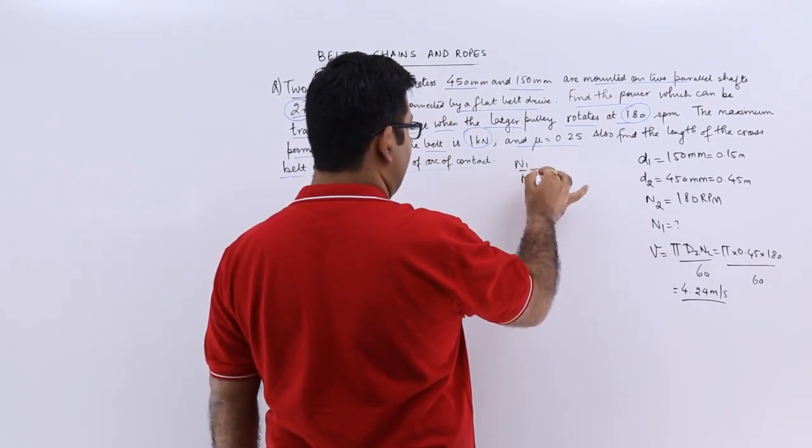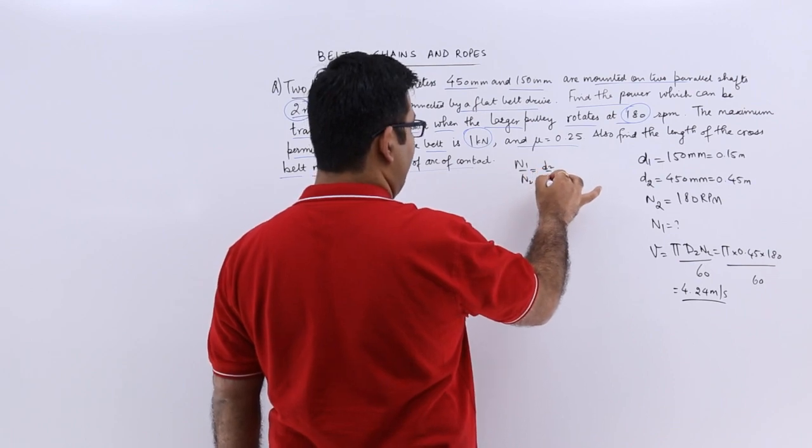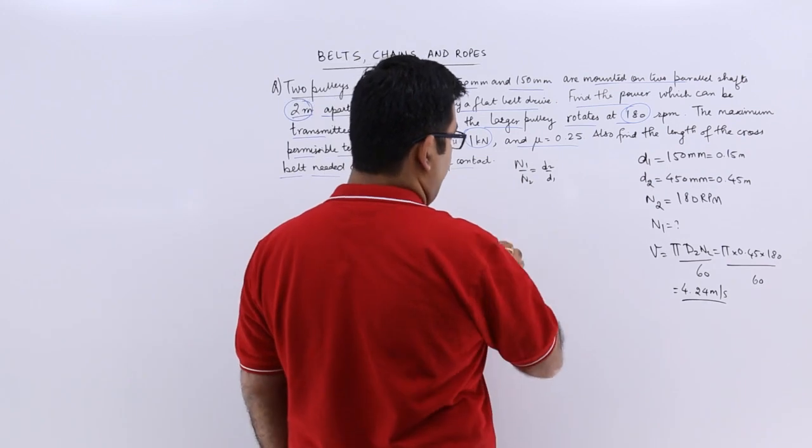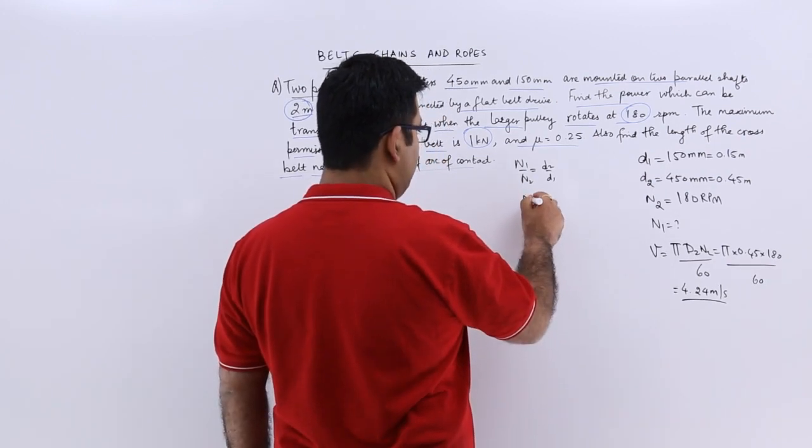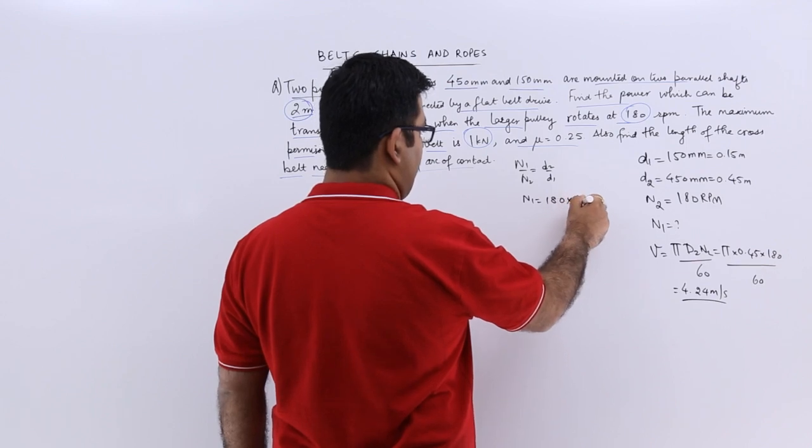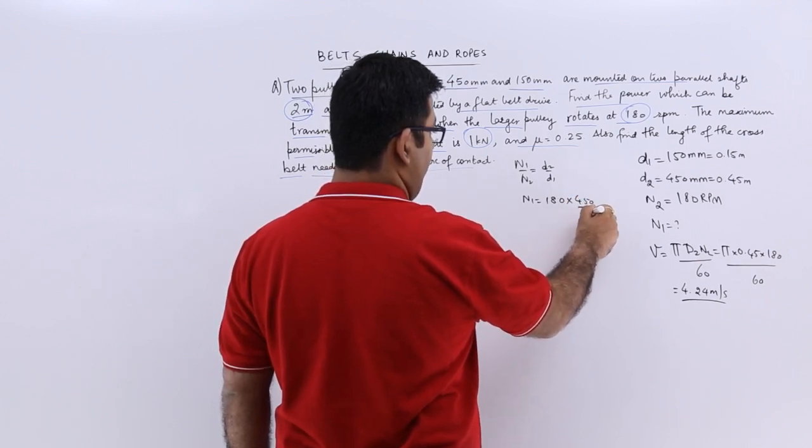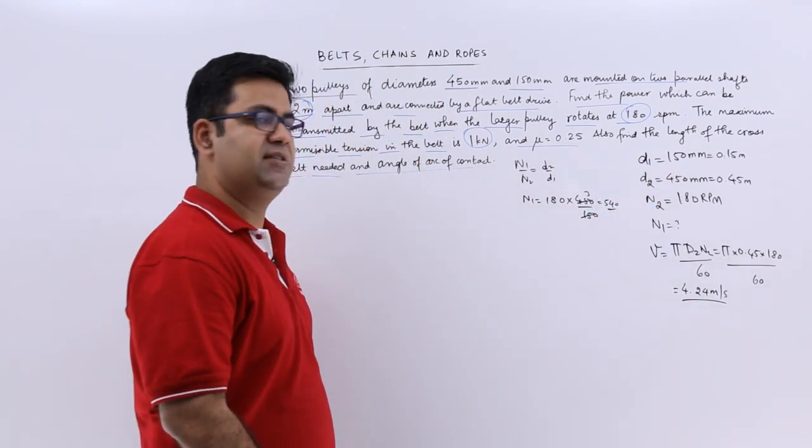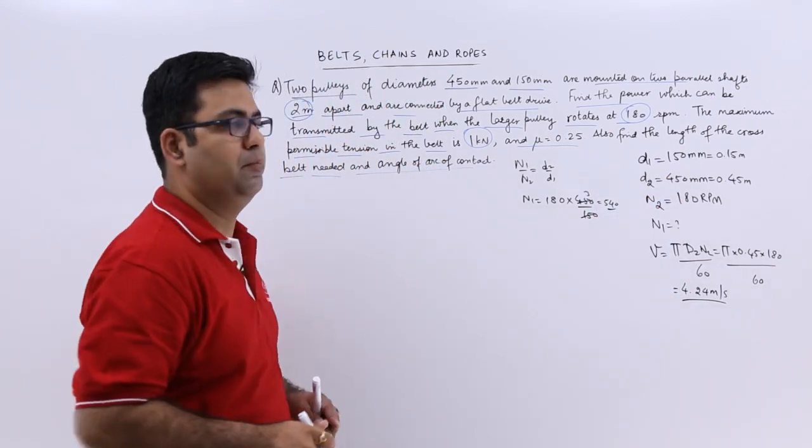Now N1 has to be found out. So N1 by N2 is equal to D2 by D1. That's the linear velocity. So N1 is equal to N2 which is 180 into 450 by 150. So you get 540 rpm as the rpm of the smaller pulley.